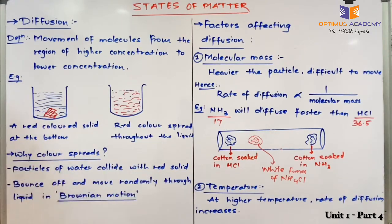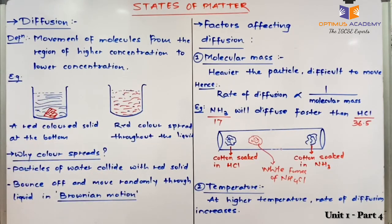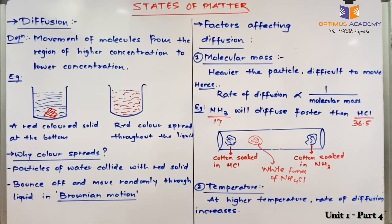The second factor that affects the rate of diffusion is temperature. As discussed in previous videos, at high temperature molecules gain kinetic energy. So at higher temperature, they have greater kinetic energy and therefore their rate of diffusion is also greater.